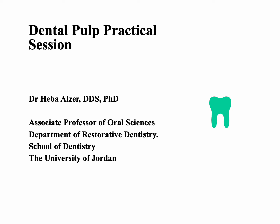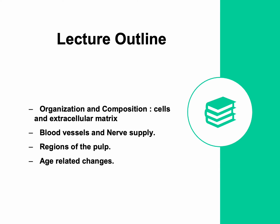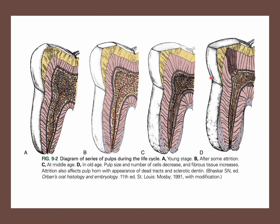This is the last part of the dental pulp practical session, where we are going to discuss the age-related changes that happen to the pulp. As we described, the size of the pulp gets smaller as secondary dentine occupies the pulpal space. The nerve supply decreases, the blood supply decreases, the cellularity decreases, more collagen fibers form, and calcifications start to happen, which are mostly related to blood vessels.